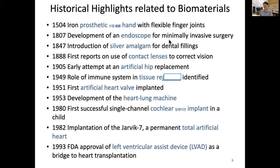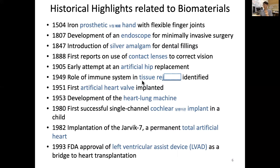More than 75 years ago, silver amalgam was introduced for dental fillings. In 1888, the first report of a contact lens to correct vision appeared. In 1905, there was an early attempt at an artificial hip replacement for those with hip joint problems. And in 1949, the role of the immune system in tissue rejection was identified.